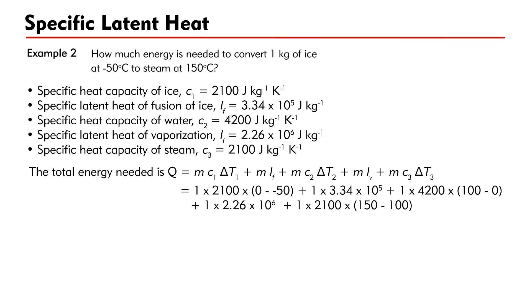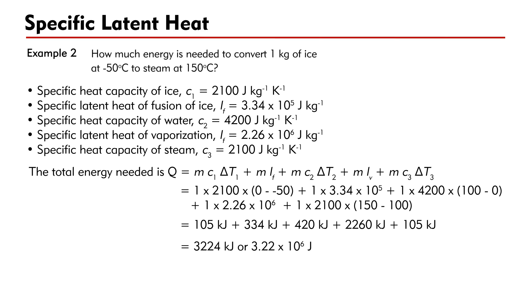This gives 105 kJ plus 334 kJ plus 420 kJ plus 2260 kJ plus 105 kJ, equal to 3224 kJ or 3.22 times 10 to the power 6 joules.